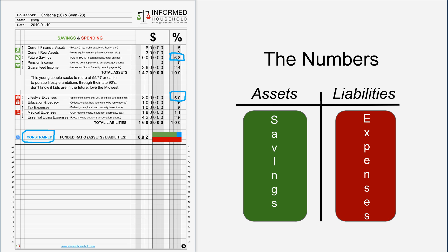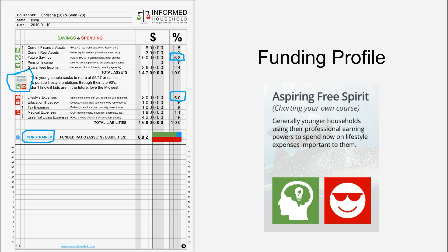comfortably or safely retire. That makes sense because this is so far out in the future — there's going to be a lot of variability in this model given the length of the planning period. With this couple's funding preference using future savings, or what we call next-generation capital, and focusing primarily on lifestyle expenses, this is what we call an aspiring young adult funding profile. On the main Informed Household website we describe the characteristics and major risks these folks face.